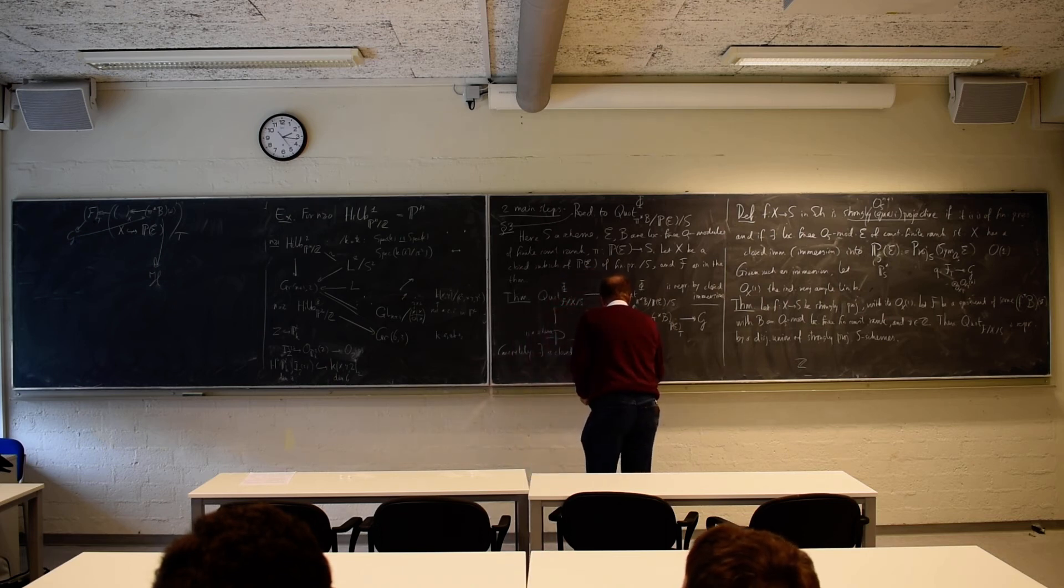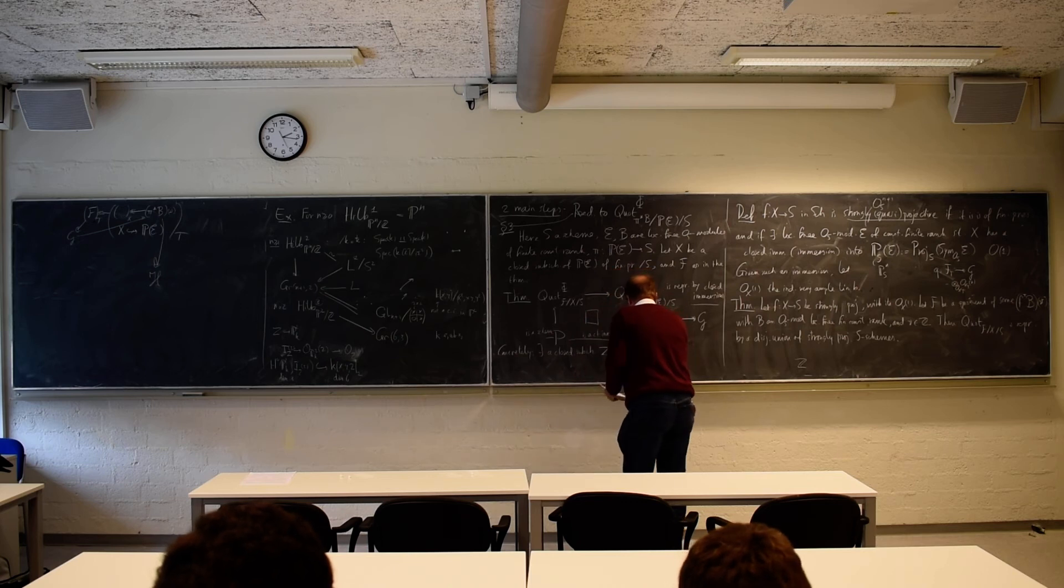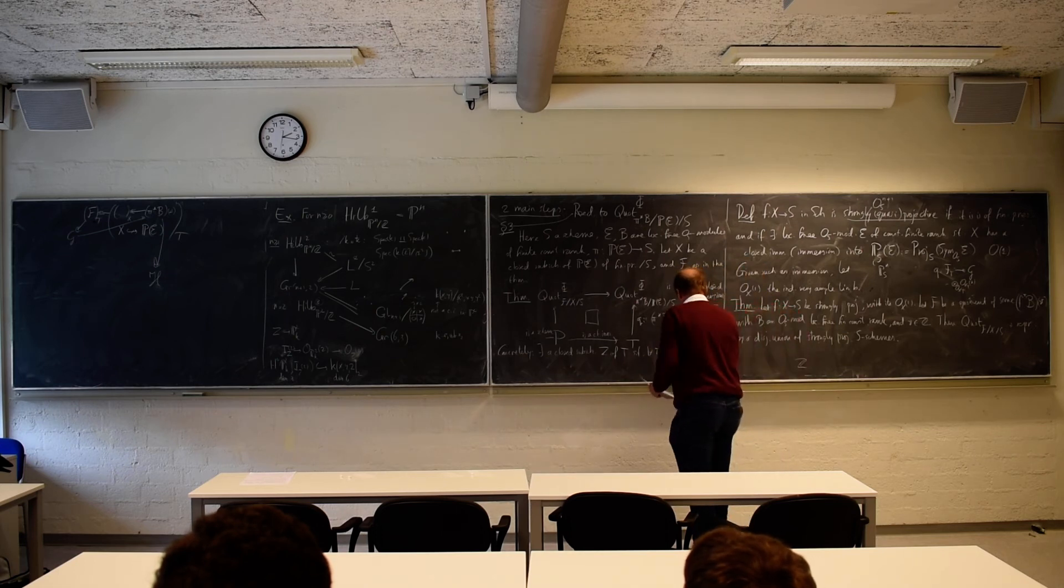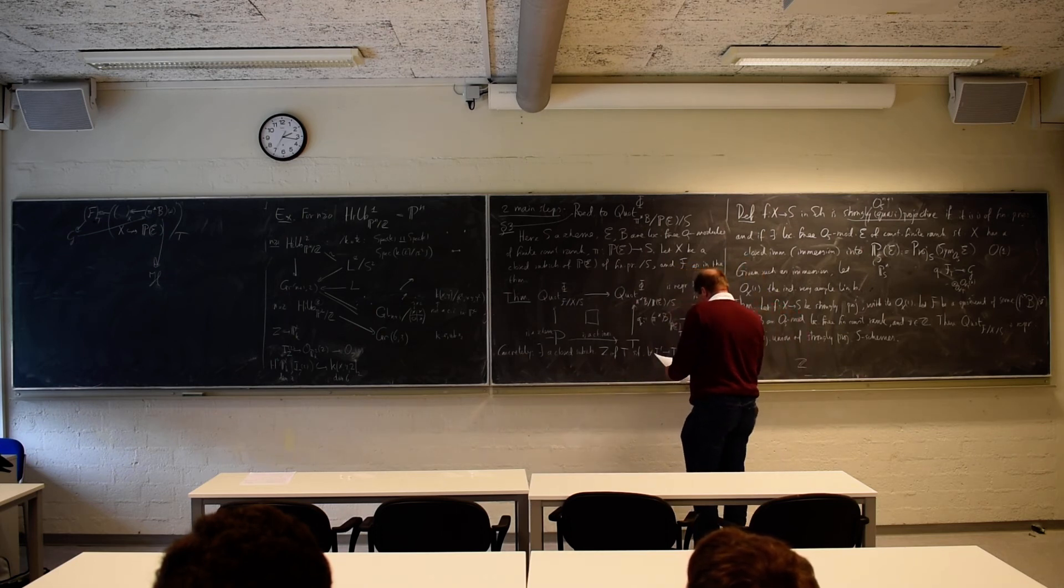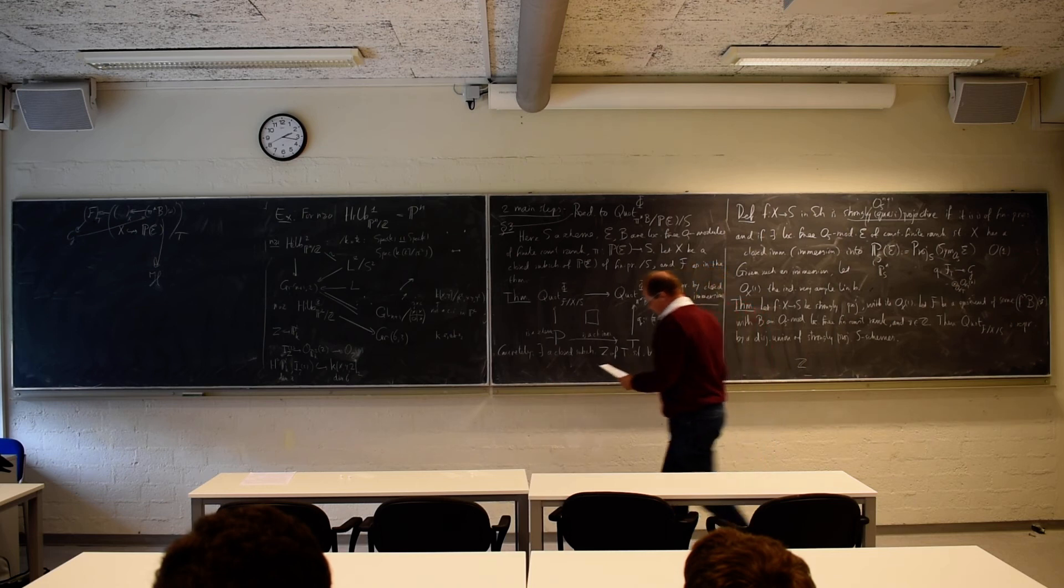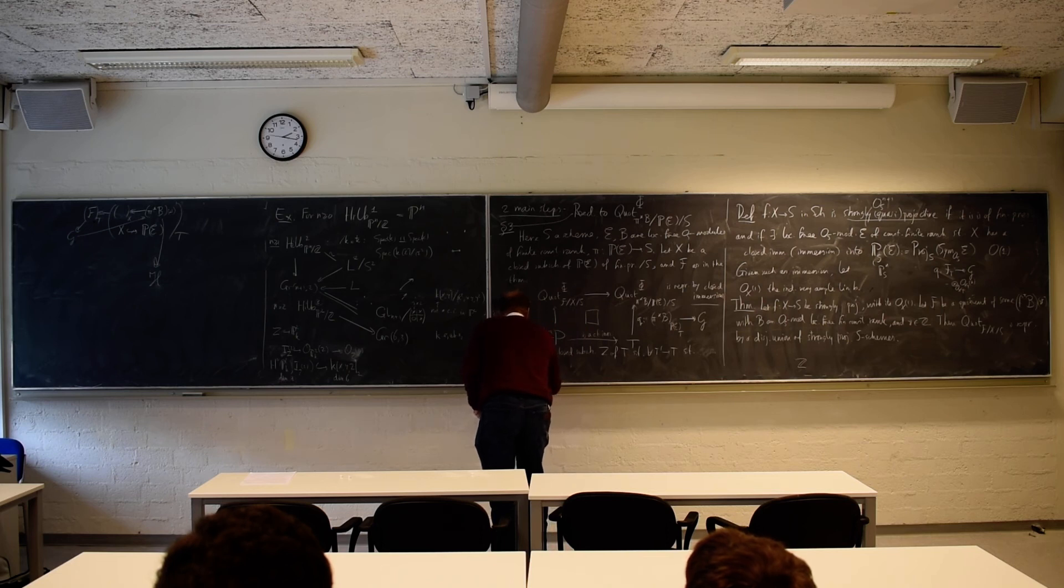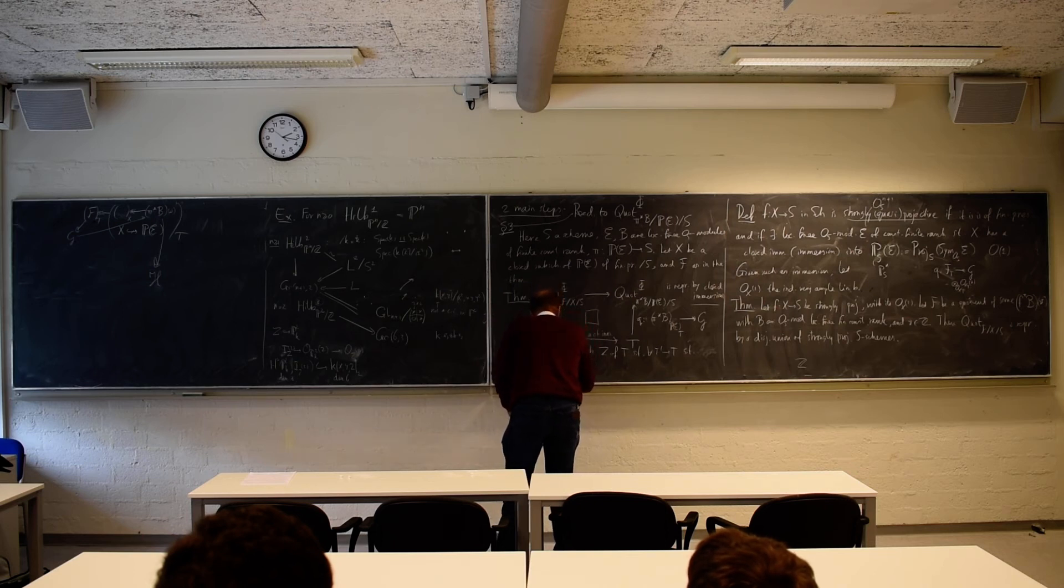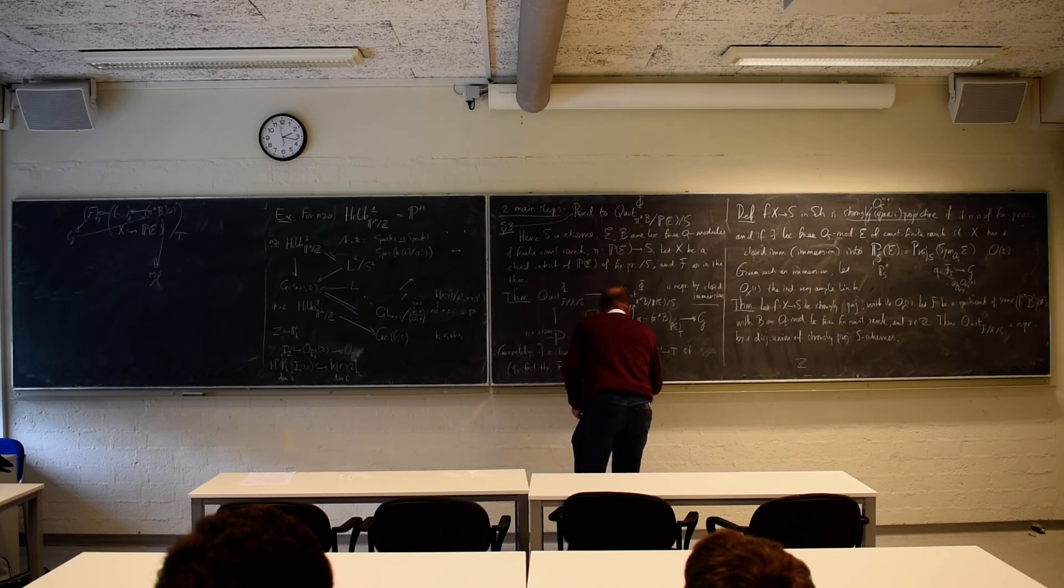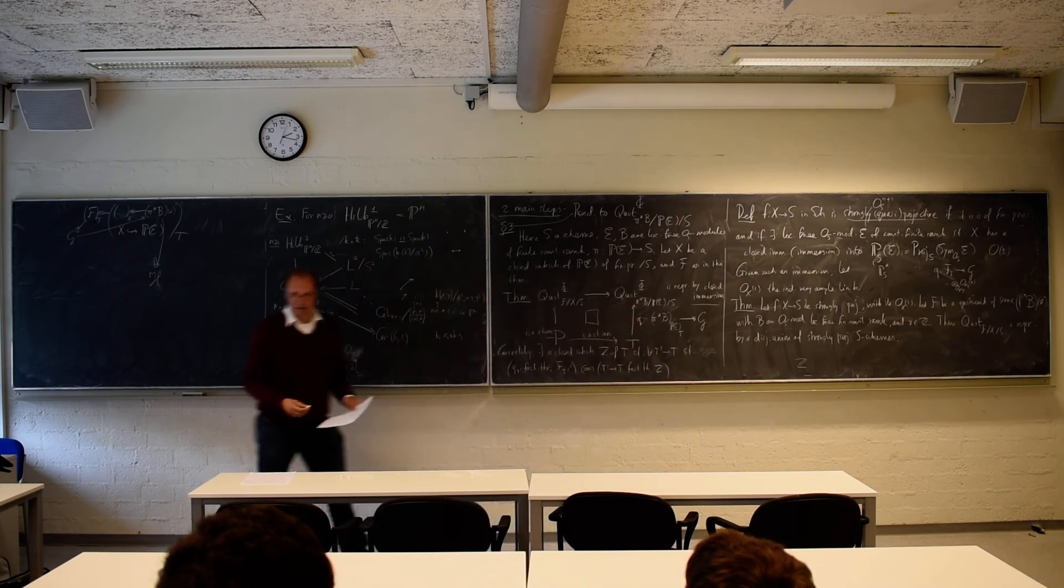Well, proof becomes technical, but this is still easy. There exists a closed subscheme. Z of T such that for every T prime to T, and this does not need to be any immersion kind of thing, such that the Q pullback to T prime. Right? This Q pullback by that base change. Factors... Oh, switch that. No. Okay. I should say there is an increment. Q T prime factors through F of T prime if and only if T prime to T factors through Z. Okay? There is a closed subscheme like that. That has this property.